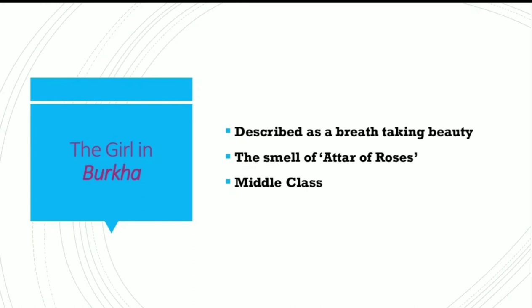The third most important character of the story is the girl in the burqa. She has not been named or specifically identified, but through the description written about her, she has been described as a breathtaking beauty. She is beautiful, she is wearing attar of roses, and she is seemingly also belonging to the middle class. Saeed is interested in her from the very first instance where she has been mentioned — the beautiful description is given, and now I am going to read it from the text.